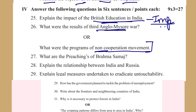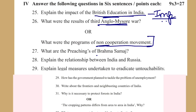What are the preachings of Brahma Samaj? So for any Samaj-related question, you should be able to remember six to eight points. Most of them are similar — they are all related to women's empowerment, women's education, widow remarriage, and prohibition of child marriage.